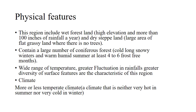Next are the physical features of the region. This region includes wet forest land and dry steppe lands. It contains a large number of coniferous forests and a wide range of temperatures. There is greater fluctuation in rainfall and greater diversity of surface features. The climate is more or less temperate.